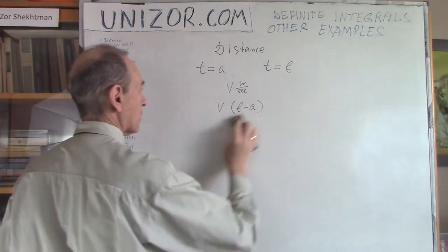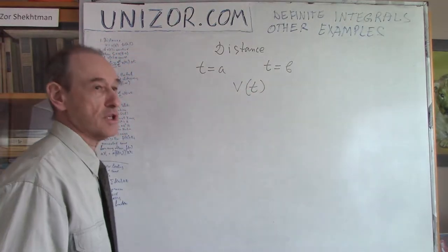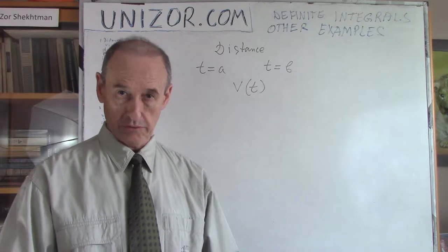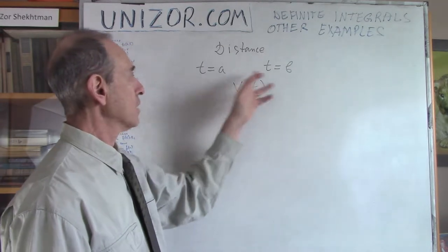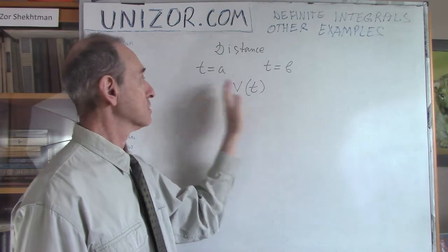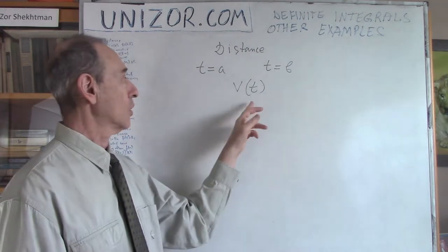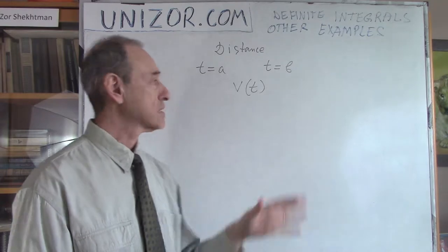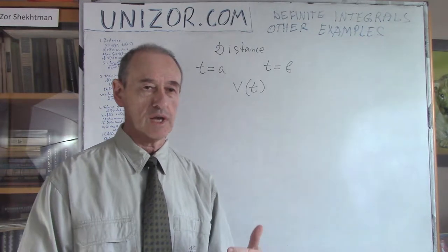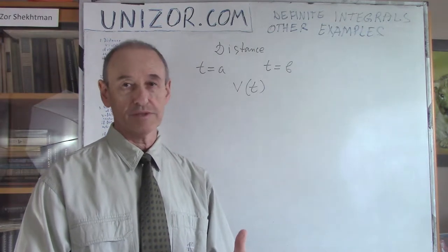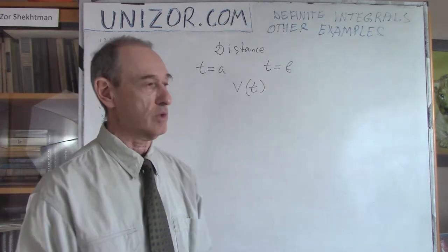What if our speed is not constant, but instead a function of time? We do know this function of time, and our problem is exactly the same: calculate how much distance we have covered from time T equals A to time T equals B, if at any particular moment we know the speed of the car. We assume that this speed is smooth — continuous, differentiable — whatever we need.